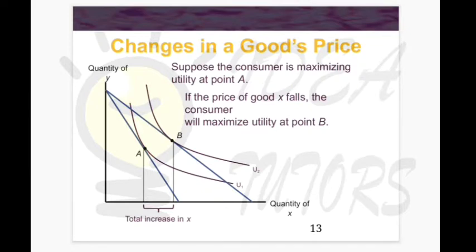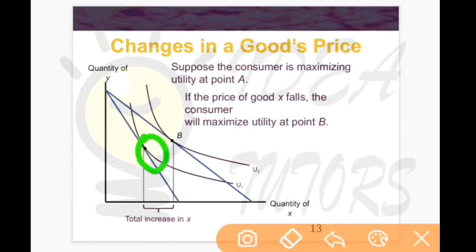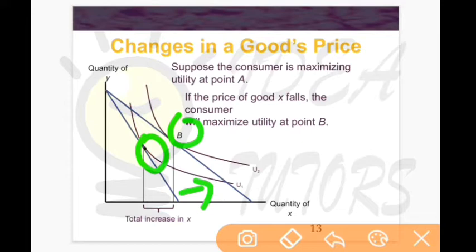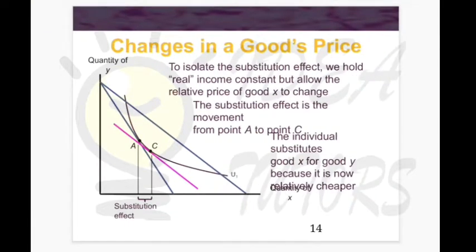Suppose we have good X and good Y, and the consumer is initially maximizing utility at point A — the initial point. Now if the price of good X falls, the consumer will maximize utility at point B. As the price of X falls, the consumer is able to purchase more of X, and the budget line shifts outward on the X axis.